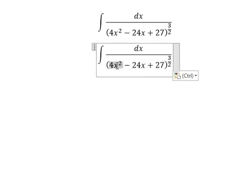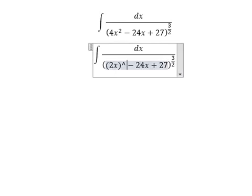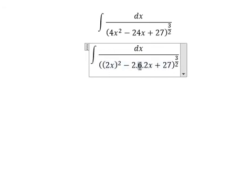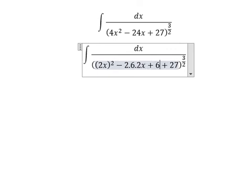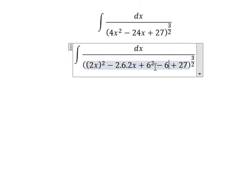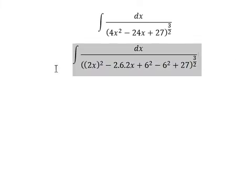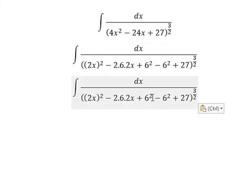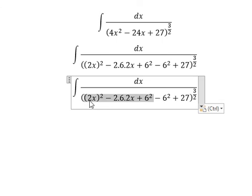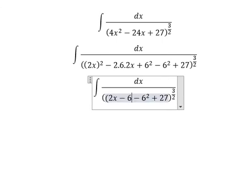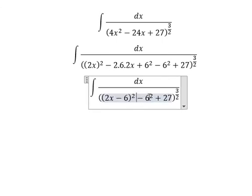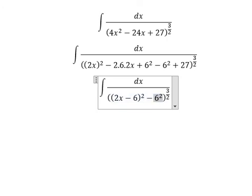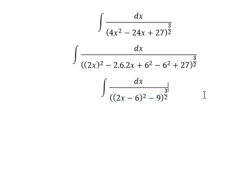We see that 4x square, that's about 2x square in here. 24 we can put into number 2, number 6, and 2x. So this one we have number 6. So we need to add about 6 square in here. Later that we need to minus about 6 square. Because I want to create a binomial identity in here. That should be binomial 2x minus 6 to the power of 2. Negative 6 square plus 27. You got about negative number 9.